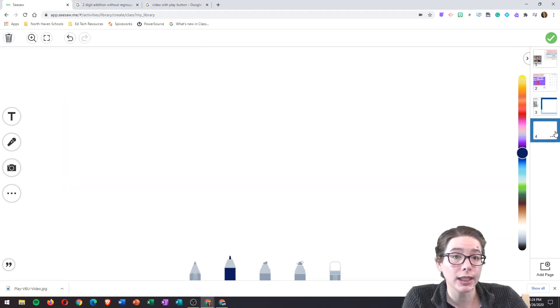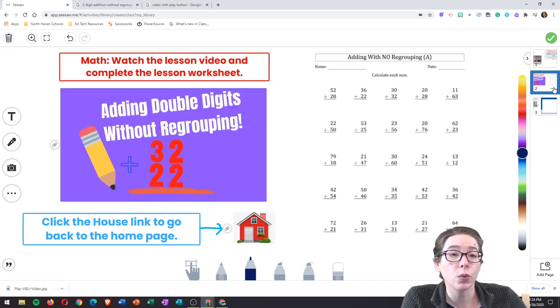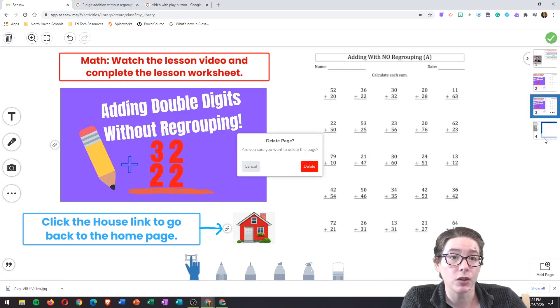If you want to delete a page after you've created it, click on it, click the three dots, and then click delete. If you have a page that you want to use as a model for your next page, click the three dots and then click duplicate page. It will make a second version of that page.